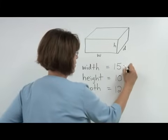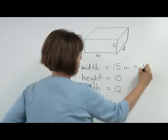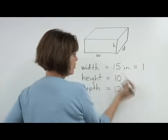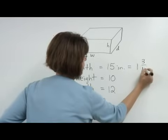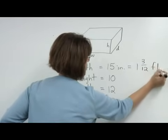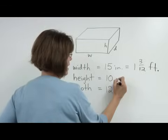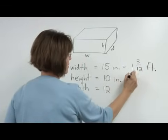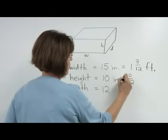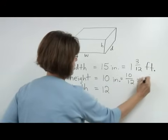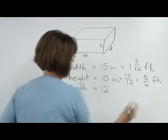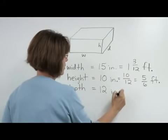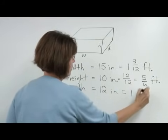15 inches is 1 foot and 3 twelfths of an inch, so 1 and 3 twelfths feet. 10 inches is 10 twelfths of a foot, we could simplify that to 5 sixths of a foot. And 12 inches is exactly 1 foot.